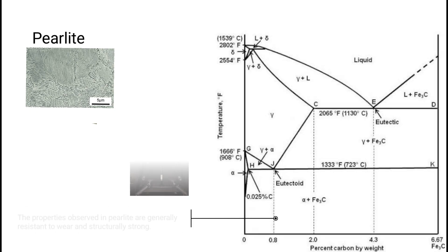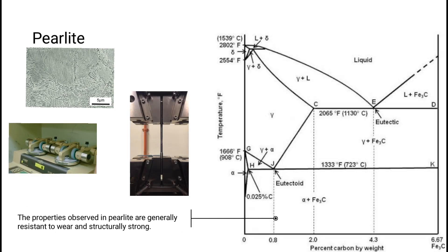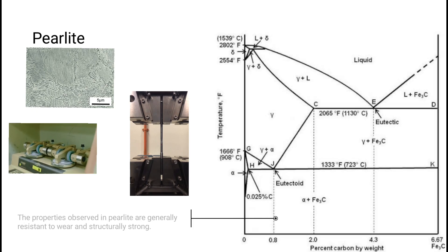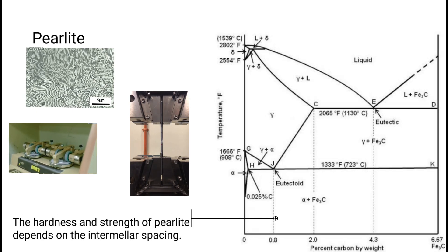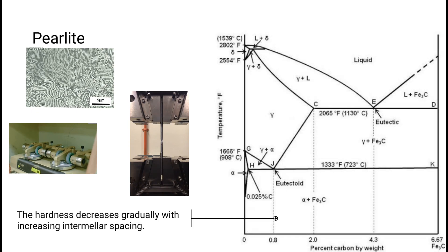The properties observed in perlite are generally resistant to wear and structurally strong. The hardness and strength of perlite depends on the interlamellar spacing. The hardness decreases gradually with increasing interlamellar spacing.